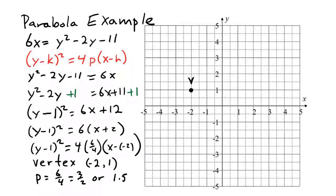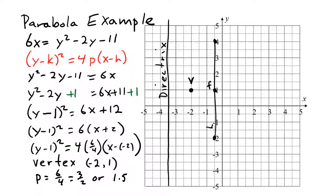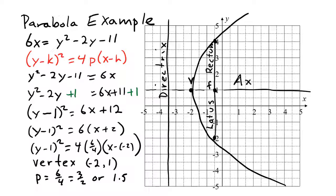Because the square is on the y, the focus must be to one side of the vertex, not above or below. Since p is positive, the focus is to the right, 1.5 spaces from the vertex. The directrix is 1.5 spaces to the left of the vertex. This makes the focus and the directrix 3 spaces apart, so we go 3 spaces above and below the focus to get the ends of the latus rectum. We sketch the parabola through those points and add the axis of symmetry through the focus and vertex, perpendicular to the directrix.